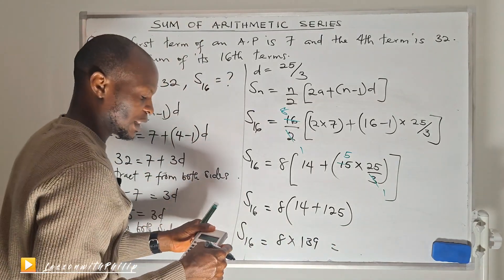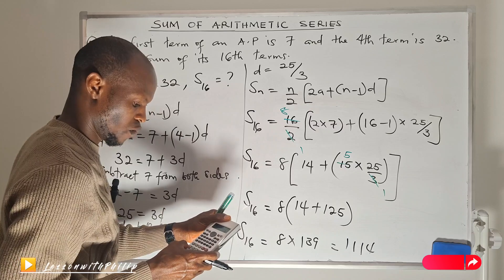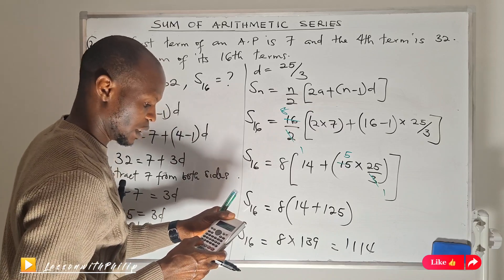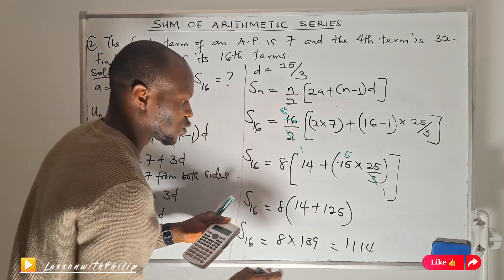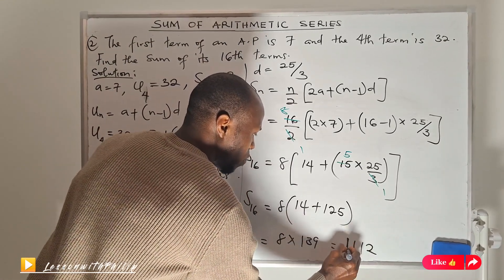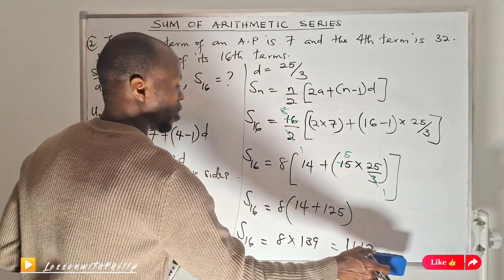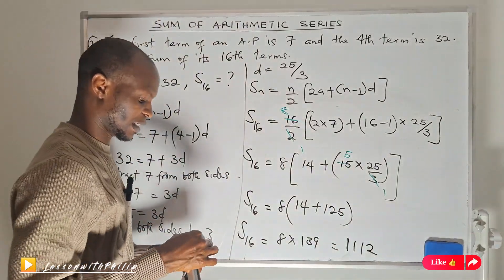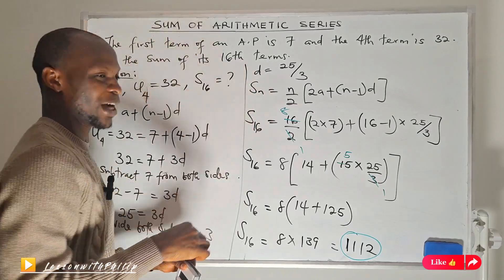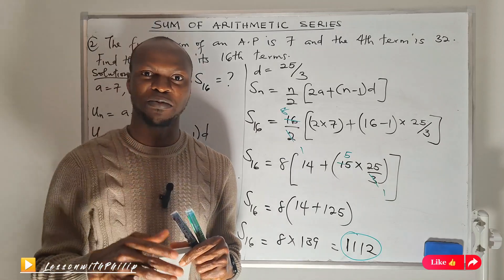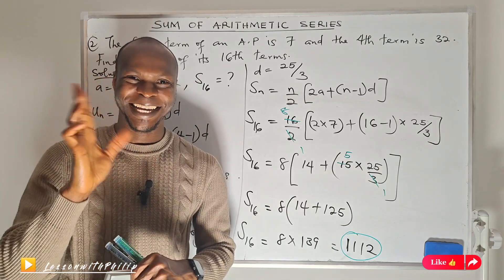14 plus 125 equals 139. Multiplying 8 times 139 gives 1112. So the sum of the first 16 terms is 1112. This is how to use the first formula. If you found this class very helpful, kindly share with your friends, subscribe to my channel, and like the video. I'll see you in my next class. Thank you so much, bye bye.